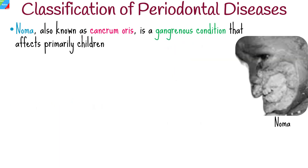The fifth type of periodontal disease is Noma, also known as cancrum oris. It is a gangrenous condition that affects primarily children.